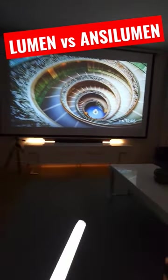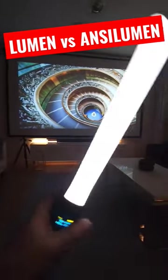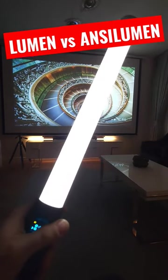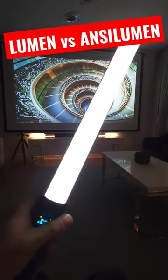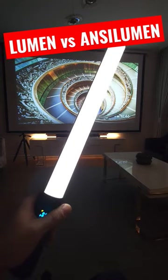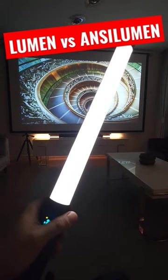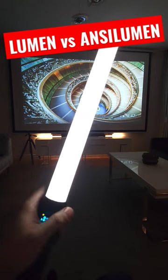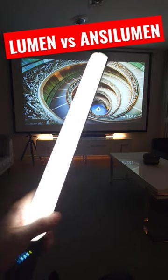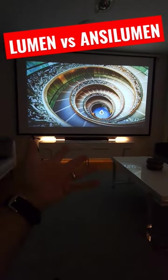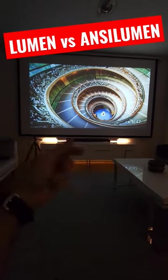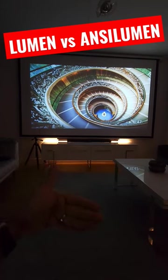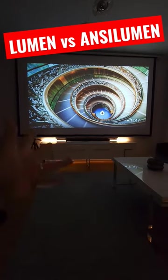Many cheap brands tend to declare their LED volume, which means lumens, to get away with higher numbers. Lumens is about 2.4 times higher in number than ANSI Lumens. So if you see a lumens value that seems too high, just divide it by 2.4 to get the real ANSI Lumen value roughly.